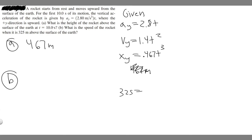So 325 equals, because we're using the position, 0.467 times t cubed. So if you go ahead and do this, if you want to solve, divide both sides by 0.467. So you're going to get t cubed equals 325 divided by 0.467, which is 695 and so on.